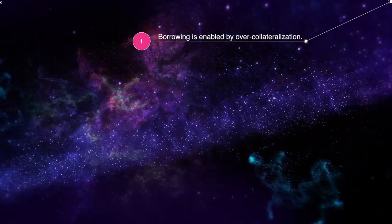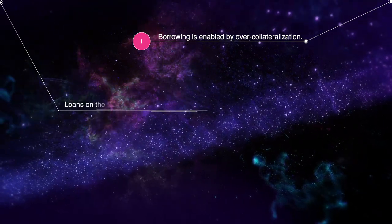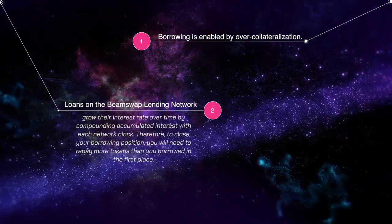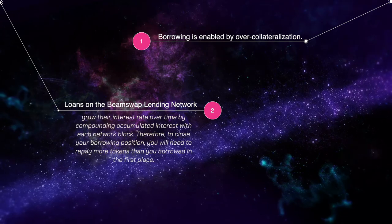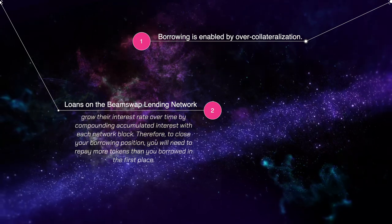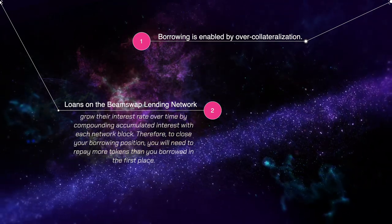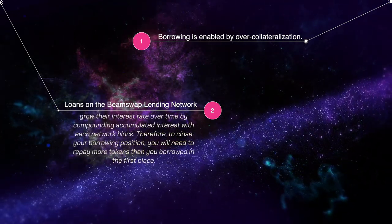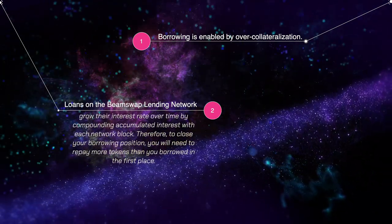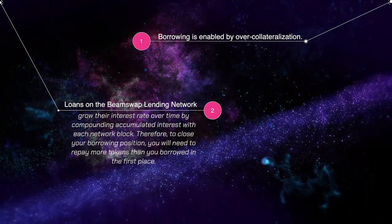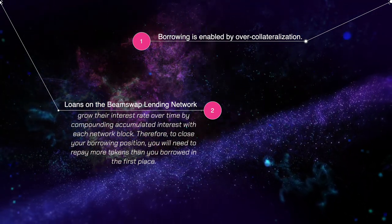Loans on the BeamSwap lending network grow their interest rate over time by compounding accumulated interest with each network block. Therefore, to close your borrowing position you will need to repay more tokens than you originally borrowed.